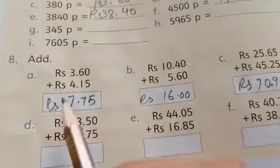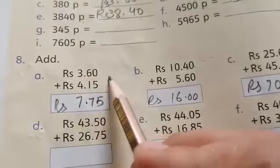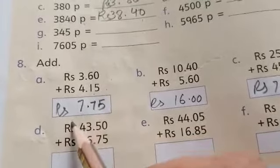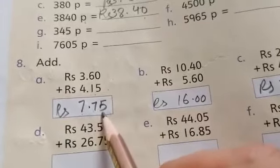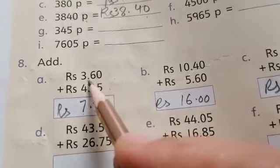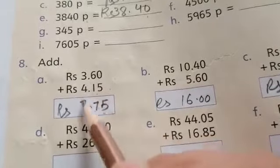Now we will add the Rupees. Rupees 3.60 plus Rupees 4.15 equals Rupees 7.75. 0 plus 5 is 5, 6 plus 1 is 7, point as it is. 3 plus 4 is 7.